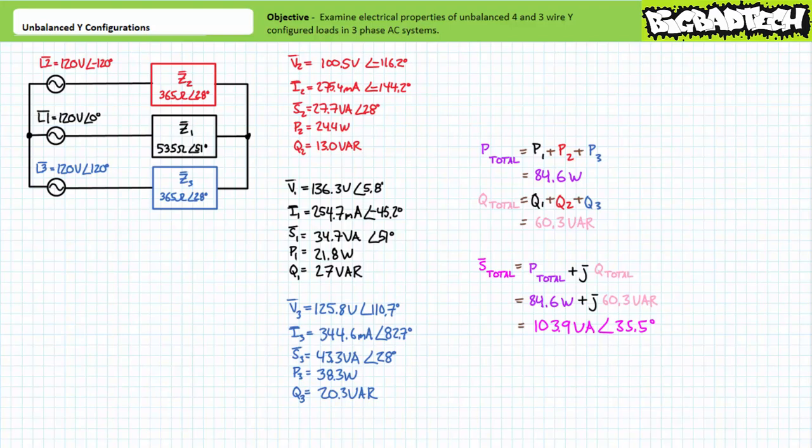In summary, unbalanced three-wire Y-configurations aren't that hard either, because the superposition theorem treats each branch independently then summates the individual effects, accounting for not only magnitude and phase shift but also polarity and direction. As long as you stay organized, the superposition theorem is a great tool for three-phase AC circuit analysis of unbalanced loads.